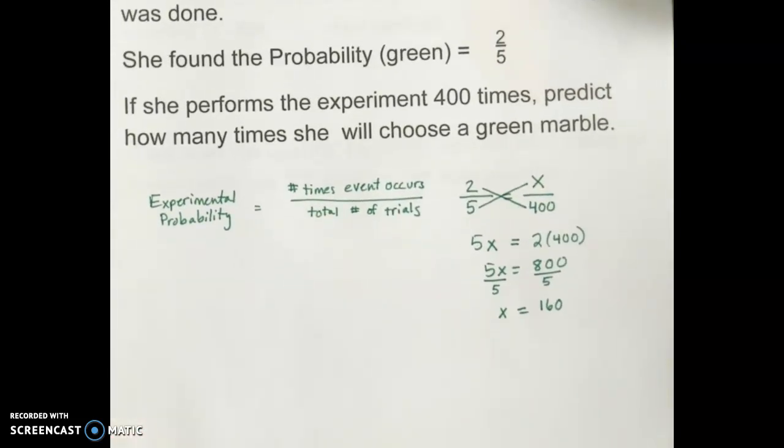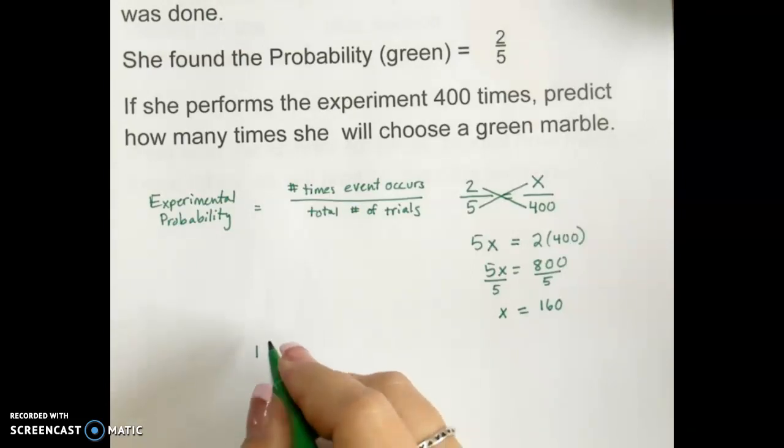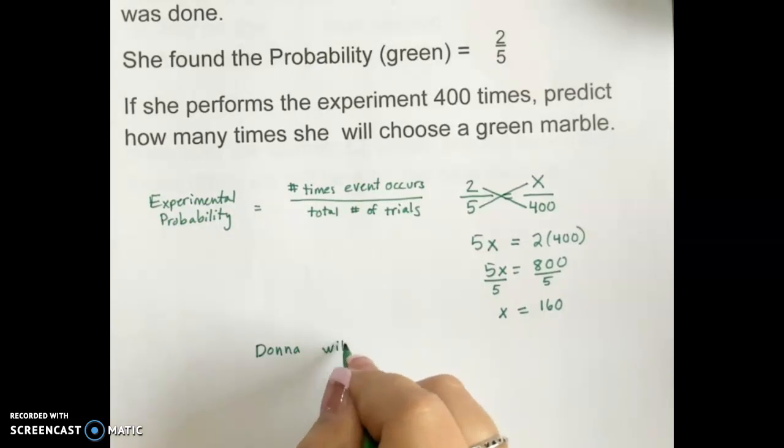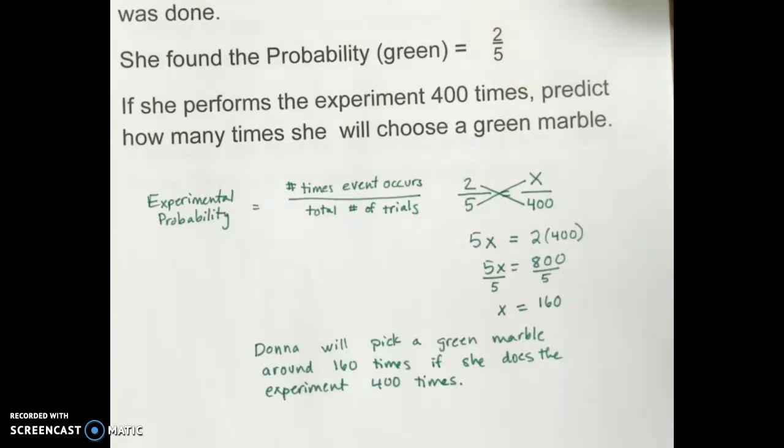Now this is a word problem, so I'm going to write my answer in the form of a sentence. What this answer really means is that if Donna performed this marble experiment 400 times, she would pick a green marble around 160 times. So there's my answer in the form of a sentence.